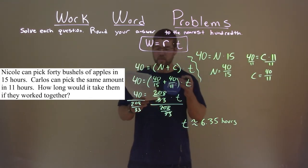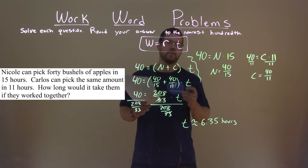If they worked together, they could pick 40 bushels of apples in 6.35 hours.